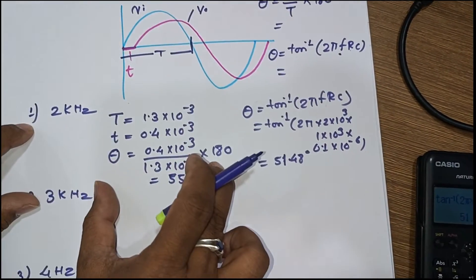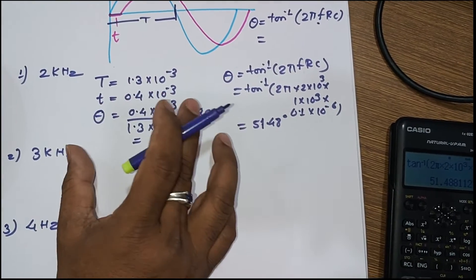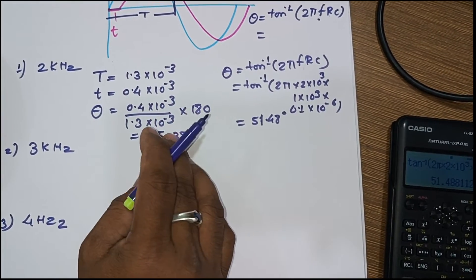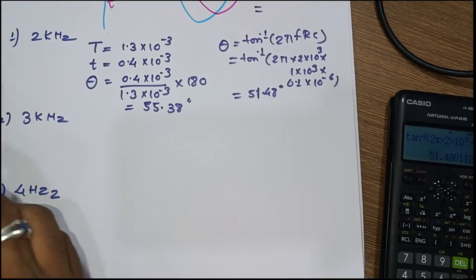There may be a 10% tolerance difference. So the observed value is 55.38° and the calculated value is 51.48°. Now let us give 3 kilohertz frequency at the input.